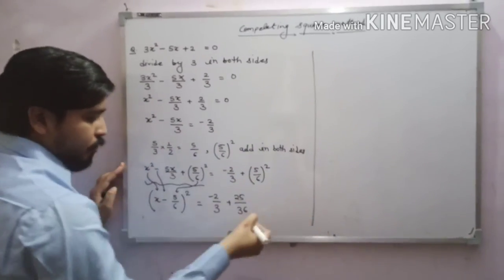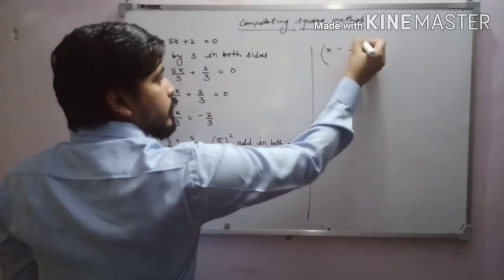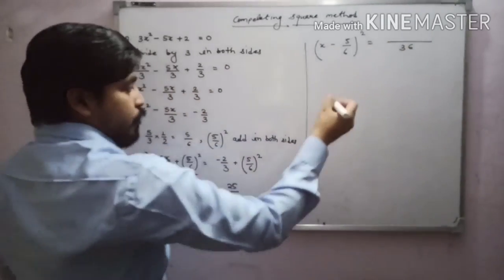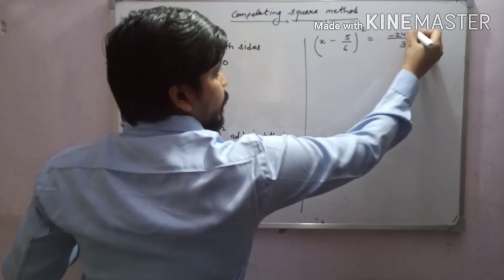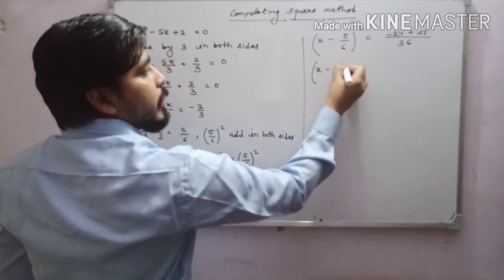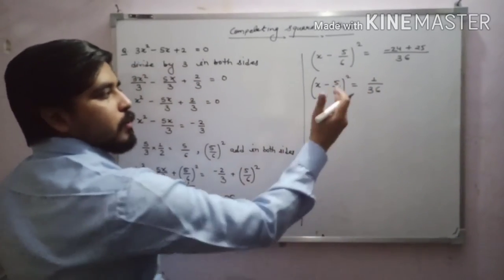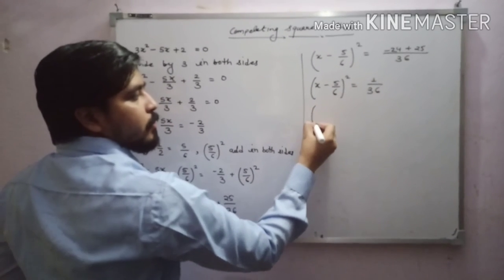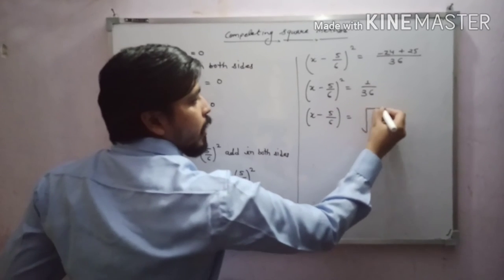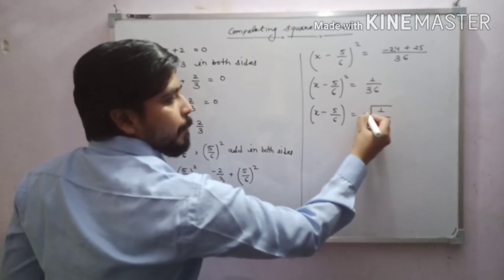Now we solve the right-hand side. (x − 5/6)² = −2/3 + 25/36. Taking LCM as 36: −24/36 + 25/36 = 1/36. So (x − 5/6)² = 1/36. Taking the square root, we write plus or minus: x − 5/6 = ±√(1/36).